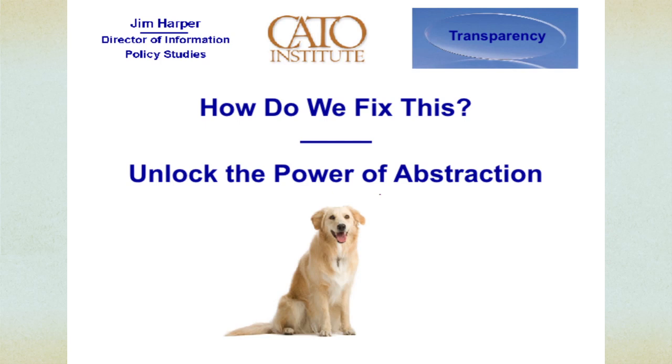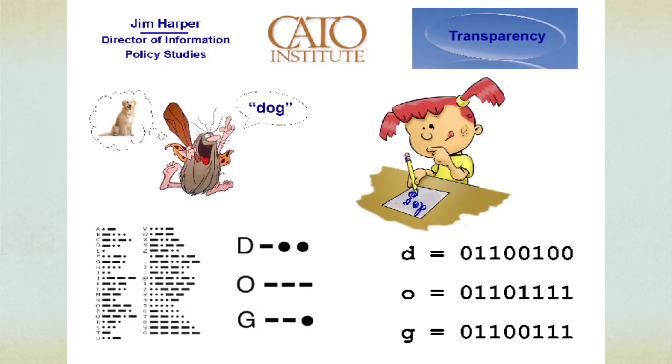Some million years ago, somebody came up with the idea of calling a dog by the name Dog — this four-legged furry creature near us. Years later, someone came up with the idea of writing down Dog, and we were able to communicate about Dog much better. Then just about a hundred years ago, Morse code put Dog into a special code that could be sent across the country almost instantaneously. And now we have binary — we can represent Dog in binary, and the concept of Dog can move around the world.